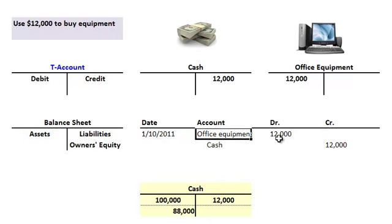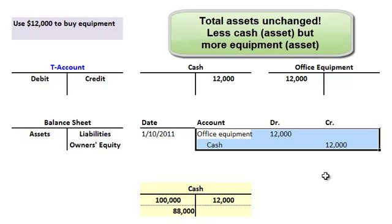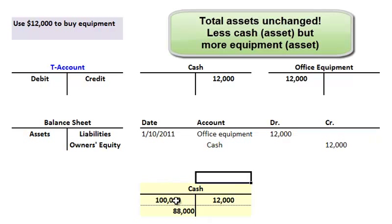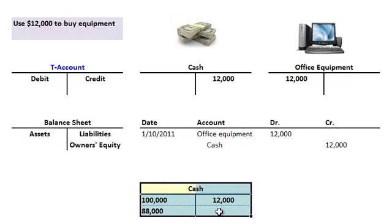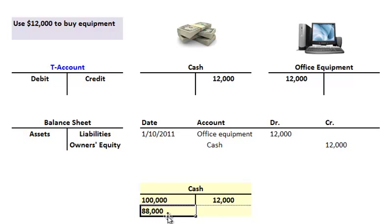The journal entries show we're debiting the office equipment account — that's an increase of $12,000. How did we get it? By crediting our cash account by also $12,000. Again, debits equal credits, but this time it's a reduction of cash. Notice they're both asset accounts, so our total assets are unchanged — we simply converted $12,000 of the cash asset into $12,000 of the office equipment asset. Looking at the general ledger cumulatively, the $100,000 debit from investors less the $12,000 credit for equipment nets out to $88,000 in cash.